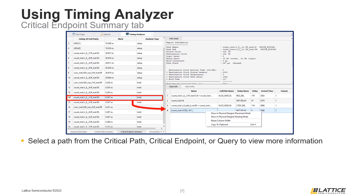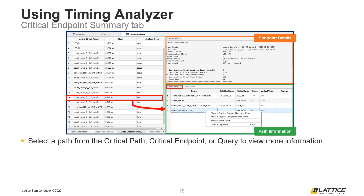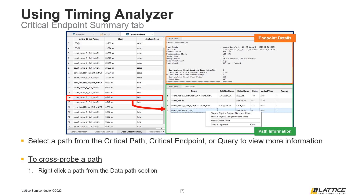The top section of the window that appears contains additional information about the endpoint that was selected. Underneath the endpoint details is information about the paths that are part of the critical endpoint, containing two tabs. The first tab, called Data Path, contains information about all of the data paths in a critical endpoint's path. The second tab, called Clock Paths, contains information about the various source and destination clocks in a critical endpoint's path. To cross-probe a path in Physical Designer, right-click the name of a path from the Data Paths section and select either of the Show in Physical Designer options to view a critical path in Physical Designer's Placement or Routing modes.